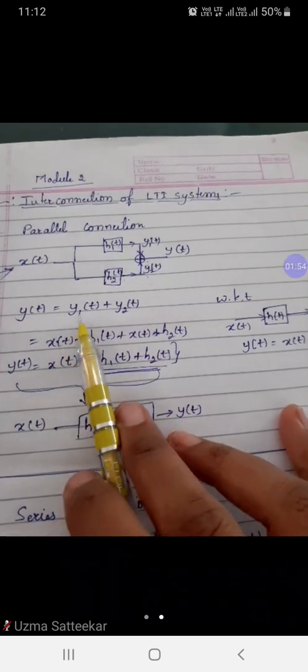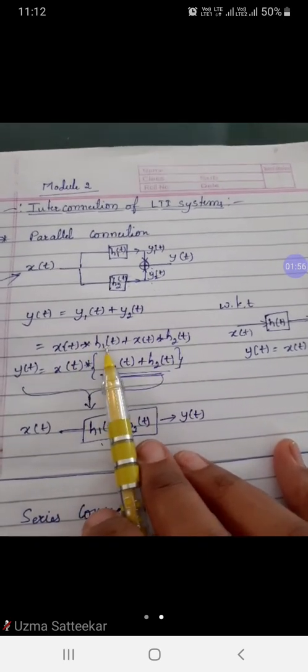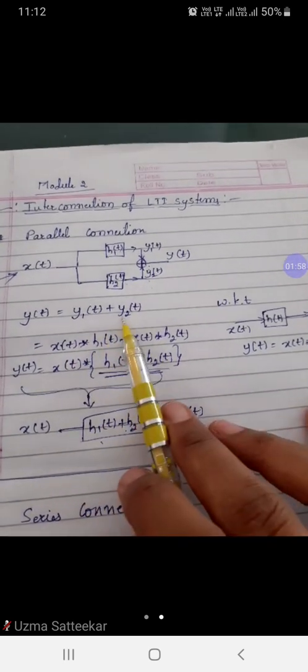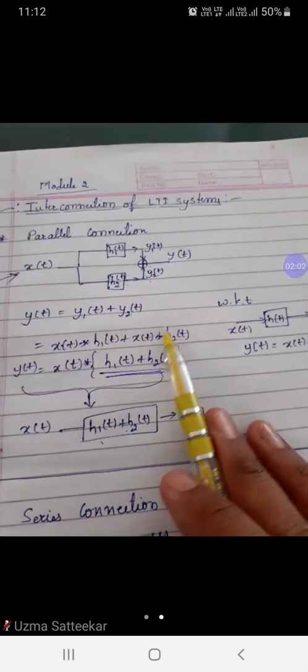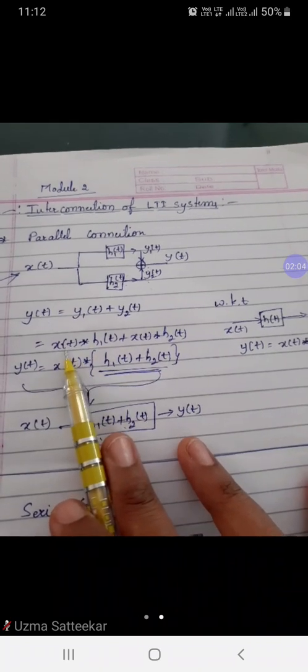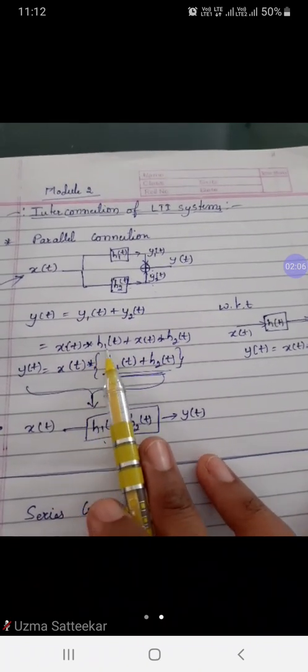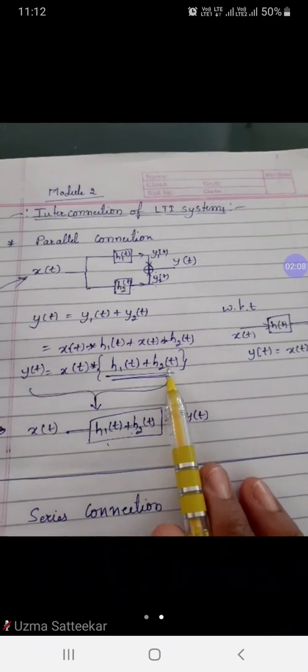Similarly, we have written y1 as x and h1 convolution. Similarly, for y2, we can write x convolved with h2. If you take x(t) convolution common, you will be left with h1 plus h2.